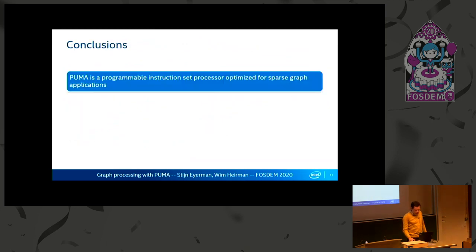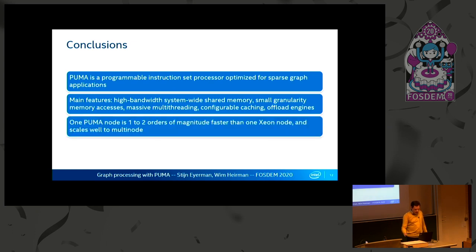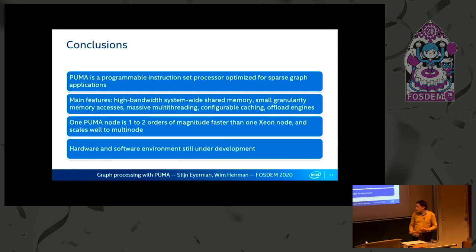PUMA is a programmable instruction set processor for graph applications. It contains many features which I discussed, and through simulation and modeling we show that it's one to two orders of magnitude faster than an equal-power Xeon, and it scales well to multi-node. It's still under development.